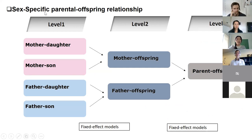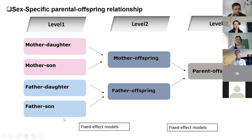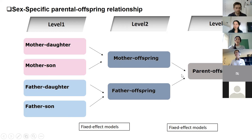In terms of the relationships, we started from the sex-specific association, which means studies reporting separately for mother-daughter, mother-son, father-daughter, and father-son. We first reported results for these level-one studies. Then we used fixed-effect models to merge level-one to level-two — for example, if one study reported both mother-daughter and mother-son, we merged these to get the mother-offspring association. The same approach was used to go from level two to level three for the final parent-offspring association.